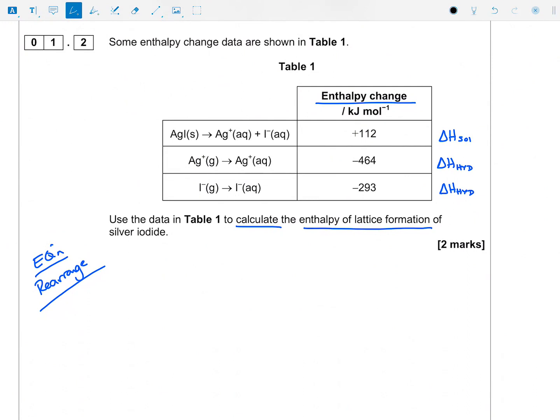1.2, a bit of a calculation to do here. Some enthalpy change data as shown in Table 1. So we've got delta H solution, delta H hydrations, and we need to calculate the enthalpy of lattice formation. So I know that delta H solution equals delta H lattice dissociation plus the sum of our enthalpy of hydrations for all of our ions.